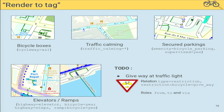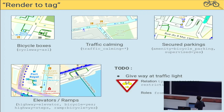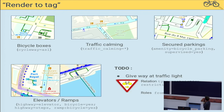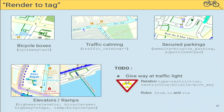We also render some new elements that, to our knowledge, are not rendered yet in other styles — the idea being 'render to tag'. These elements may already be in the OSM database but are often not maintained because they aren't rendered, so people don't see them and aren't aware to update them. We render bicycle boxes, traffic calming infrastructure, and make the distinction between regular bicycle parking and secured supervised parking. For elevators and stairs, we take into account bicycle-friendly tags to render them in either gray or blue depending on whether they are bicycle-friendly or not.